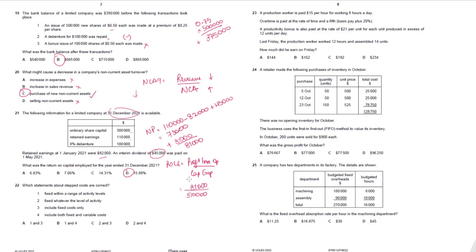Question 22. Which statements about step costs are correct? Step costs are fixed within a range of activity levels — correct. They are not fixed whatever the level of activity — that would make them fixed costs. Step costs include fixed costs only — correct, as variable costs are not part of step costs. Step costs do not include both fixed and variable costs. So statements 1 and 3 are correct, option A.